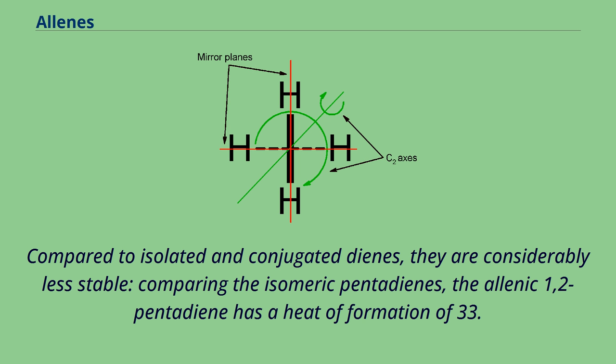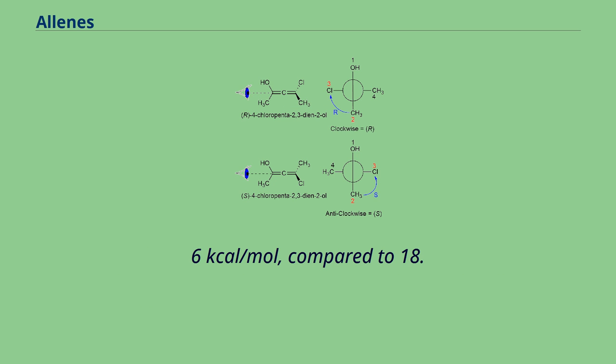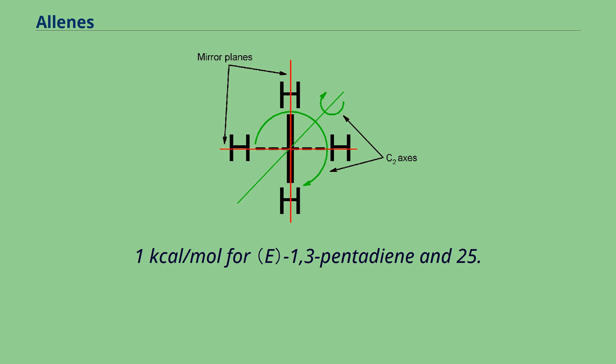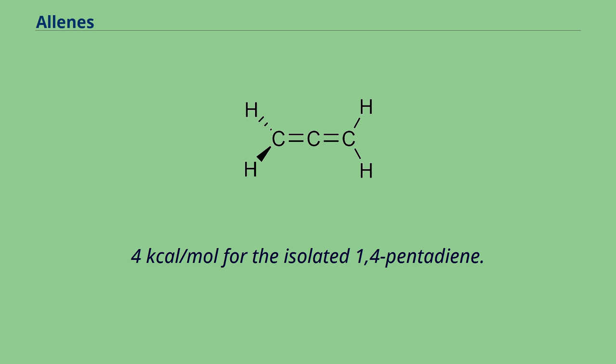Comparing the isomeric pentadienes, the allenic 1,2-pentadiene has a heat of formation of 33.6 kcal/mol, compared to 18.1 kcal/mol for 1,3-pentadiene and 25.4 kcal/mol for the isolated 1,4-pentadiene.